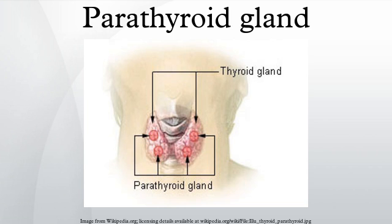Variation: The parathyroid glands are variable in number — three or more small glands — and can usually be located on the posterior surface of the thyroid gland. Occasionally, some individuals may have six, eight, or even more parathyroid glands. Rarely, the parathyroid glands may be within the thyroid gland itself, the chest, or even the thymus.